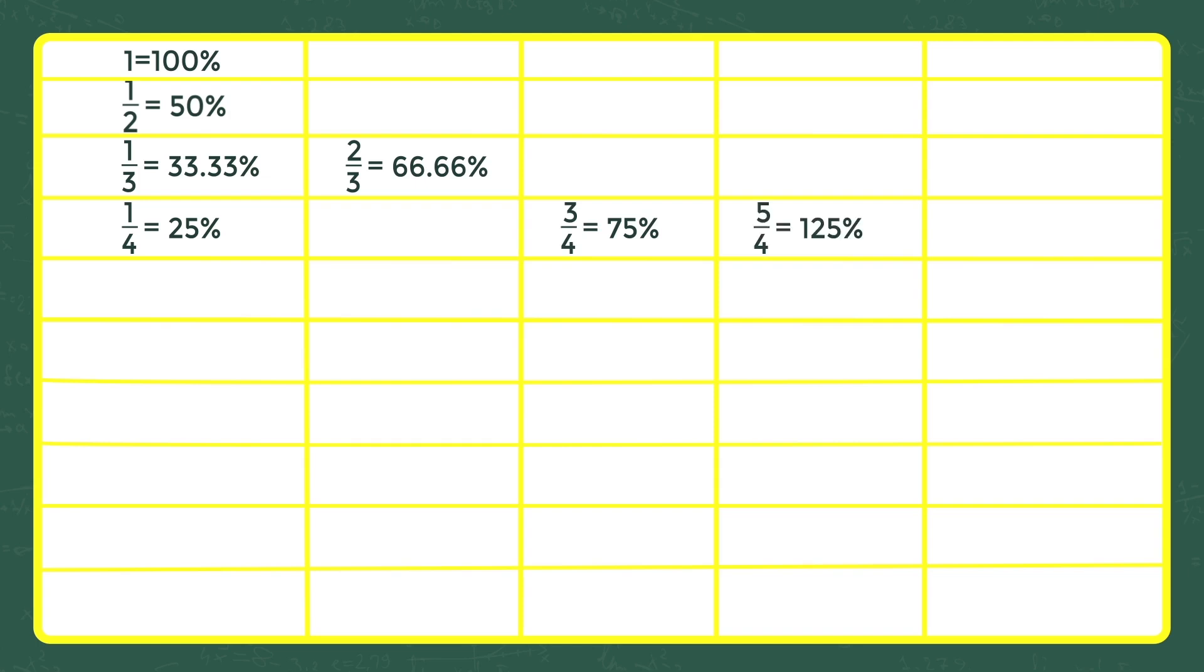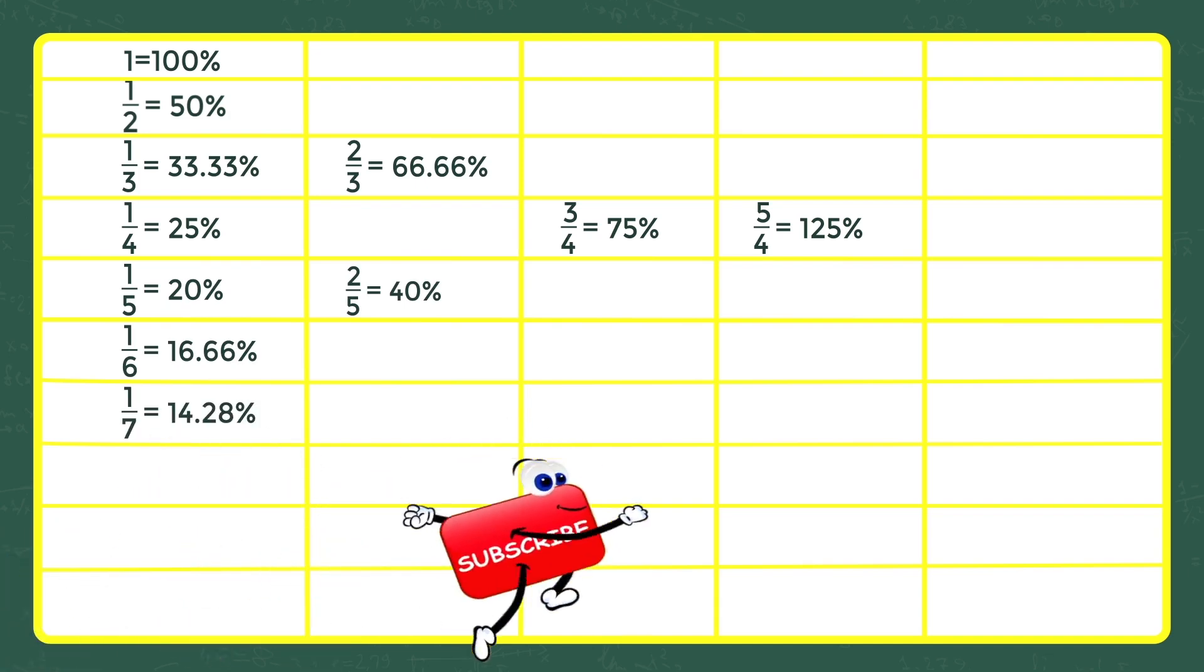5 by 4 is equal to 125%, 1 by 5 is equal to 20%, 2 by 5 is equal to 40%, 1 by 6 is equal to 16.66%, 1 by 7 is equal to 14.28%.